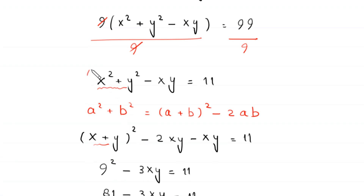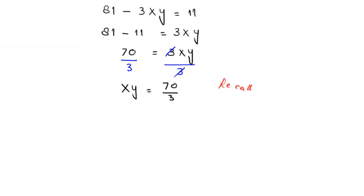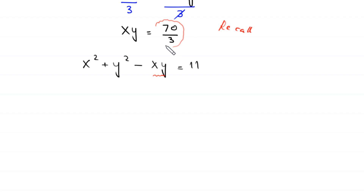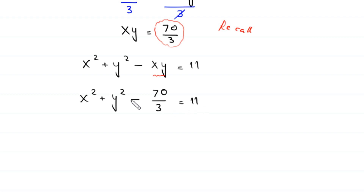We recall the equation x squared plus y squared minus xy is equal to 11. In this equation we replace xy with the value 70 over 3. So this becomes x squared plus y squared minus 70 over 3 is equal to 11. Moving negative 70 over 3 to the right hand side gives x squared plus y squared is equal to 11 plus 70 over 3.